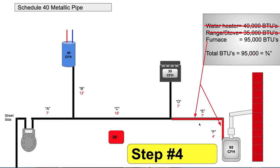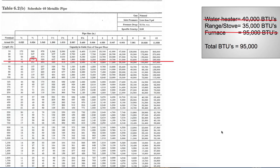The furnace is 95,000 BTUs, and section E of the main — the only load on it is the furnace — that's why they are the same size. Now that doesn't mean that if there's a half-inch gas valve inside the furnace you won't have a half-inch connection at the furnace, but the drop will be 3/4 inch. 95,000 is larger than 81,000, so you go up to the 170,000 row, staying in the 40-foot column — it's 3/4 inch.